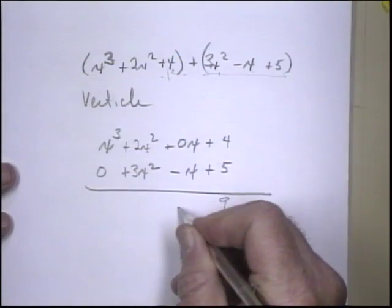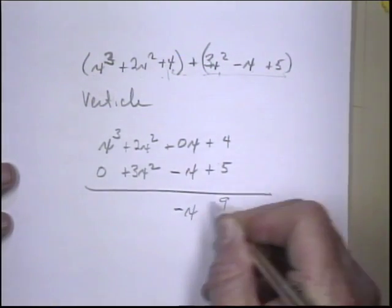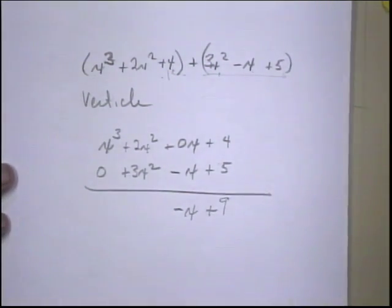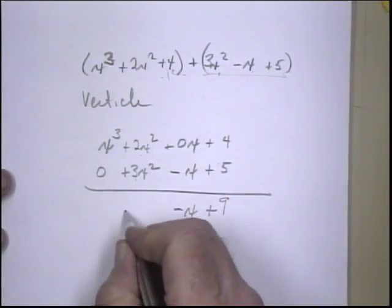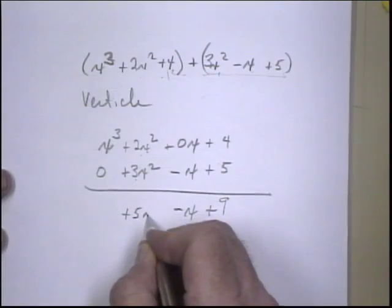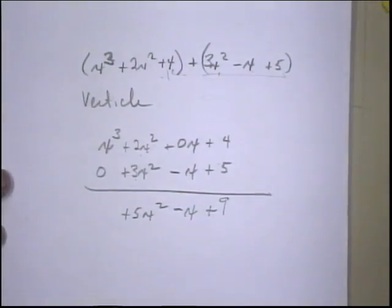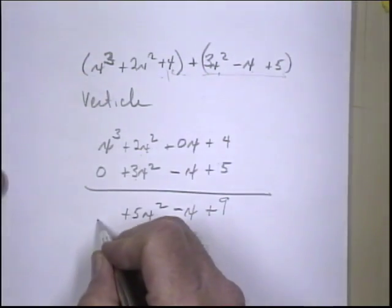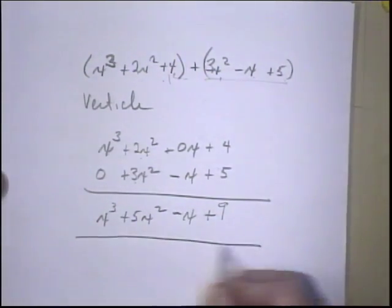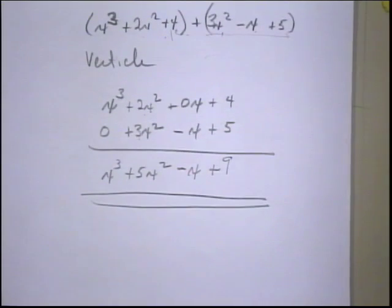0x minus x is a minus x. We have a 2x squared plus 3x squared. That's 5x squared, and we have an x cubed, and 0 is x cubed. So when we add these vertically, that's our answer.